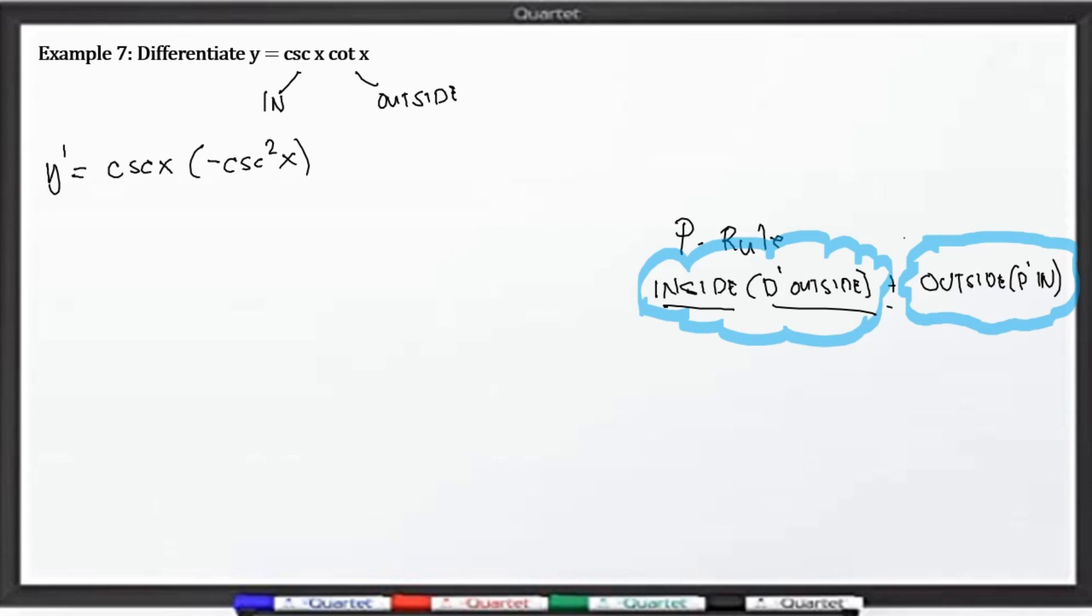Plus, o nandito na po tayo sa plus. Plus the outside. What is outside? Cotangent x. Times the derivative of the inside. The derivative of cosecant x is equal to negative cosecant x cotangent x. So let us try to expand. Y prime is equal to negative cosecant cubed x plus or minus pala kasi negative yun. So we will have minus cosecant x and then cotangent squared x. Dito po nang galing yan pag pinag-multiply na.